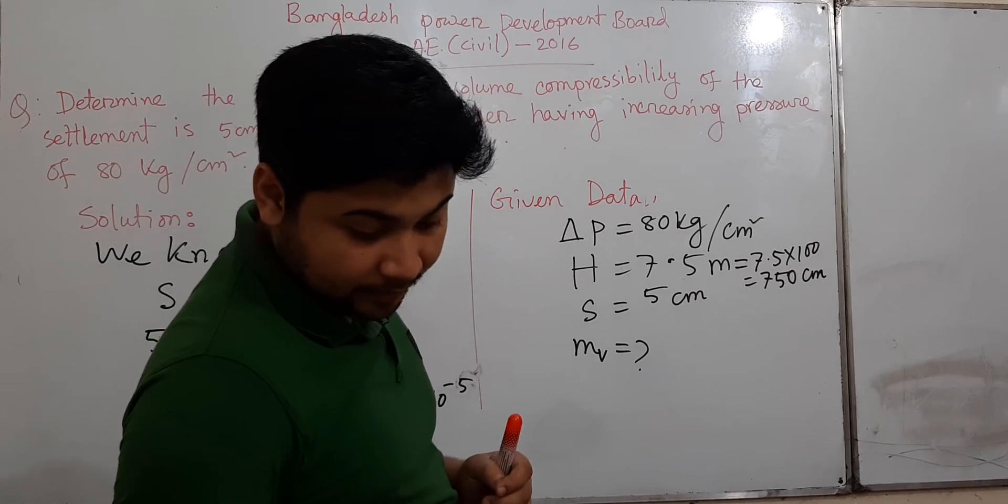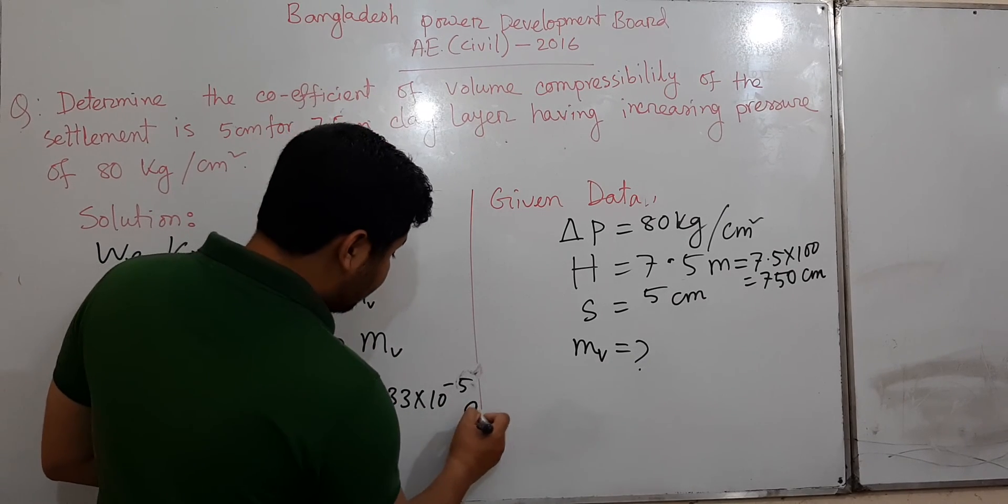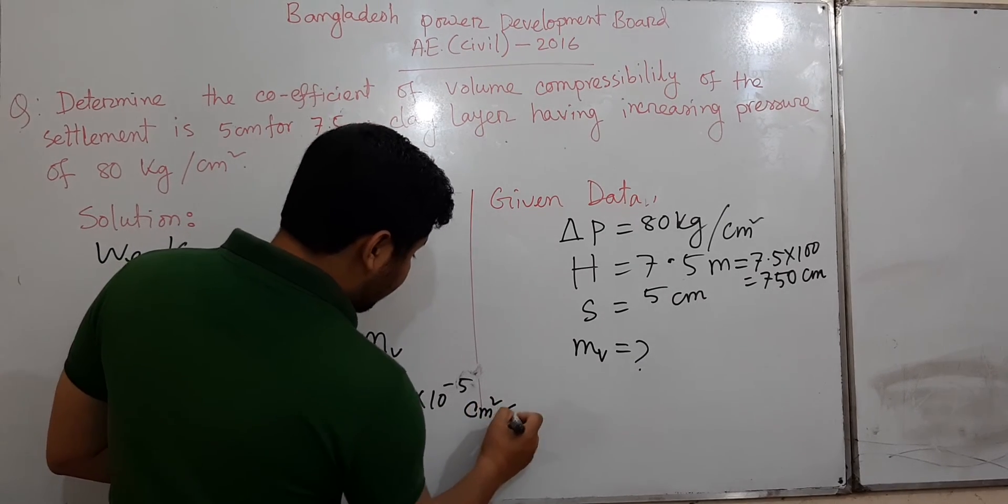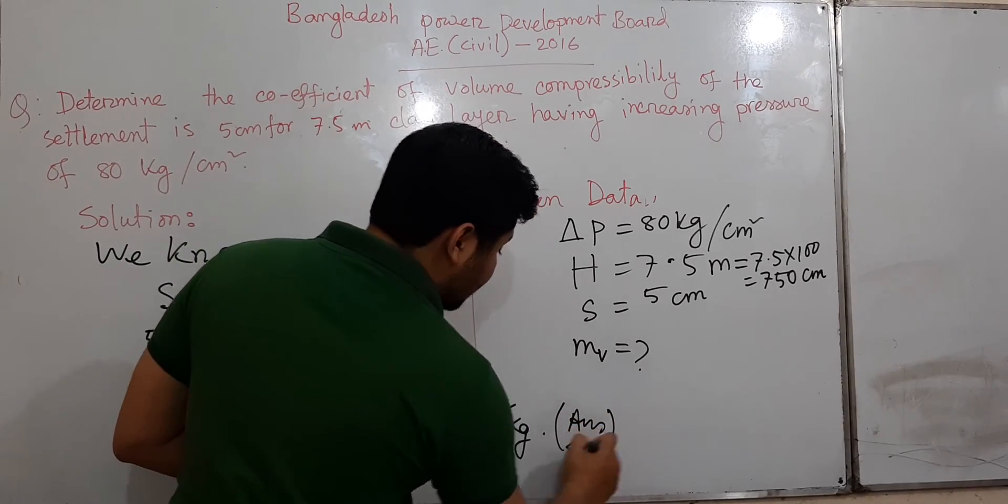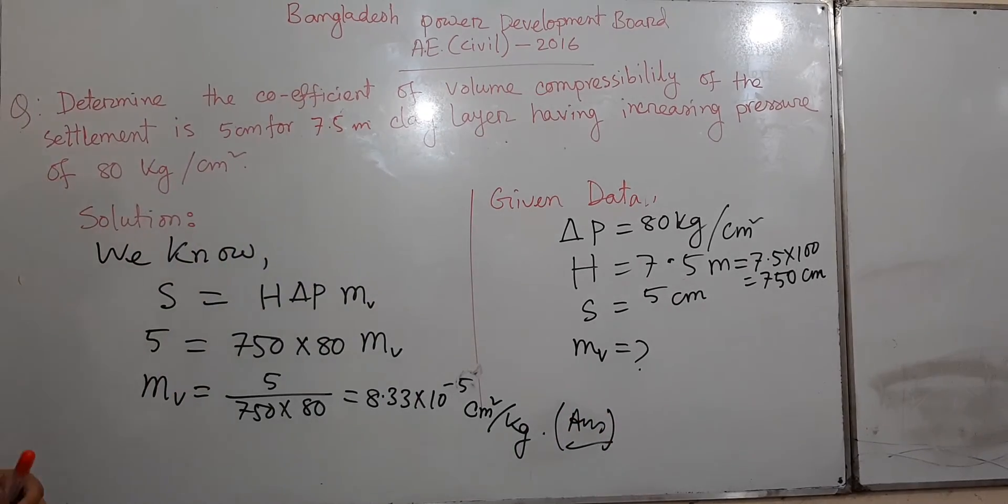The unit is cm² per kg. This is our answer for the coefficient of volume compressibility.